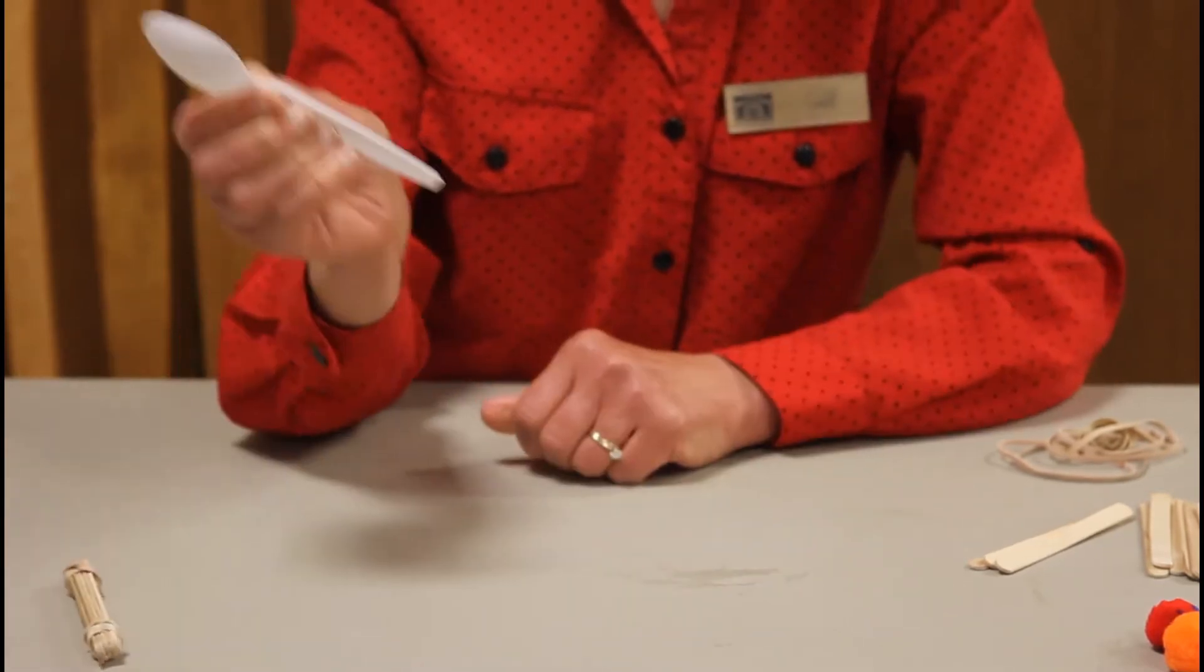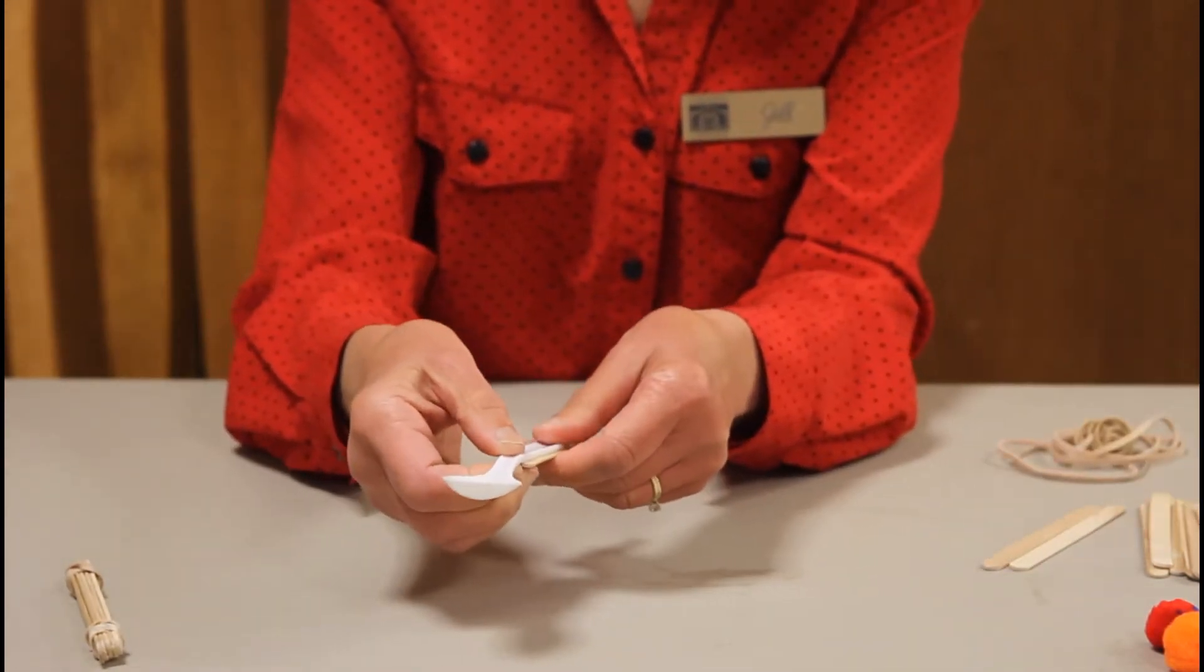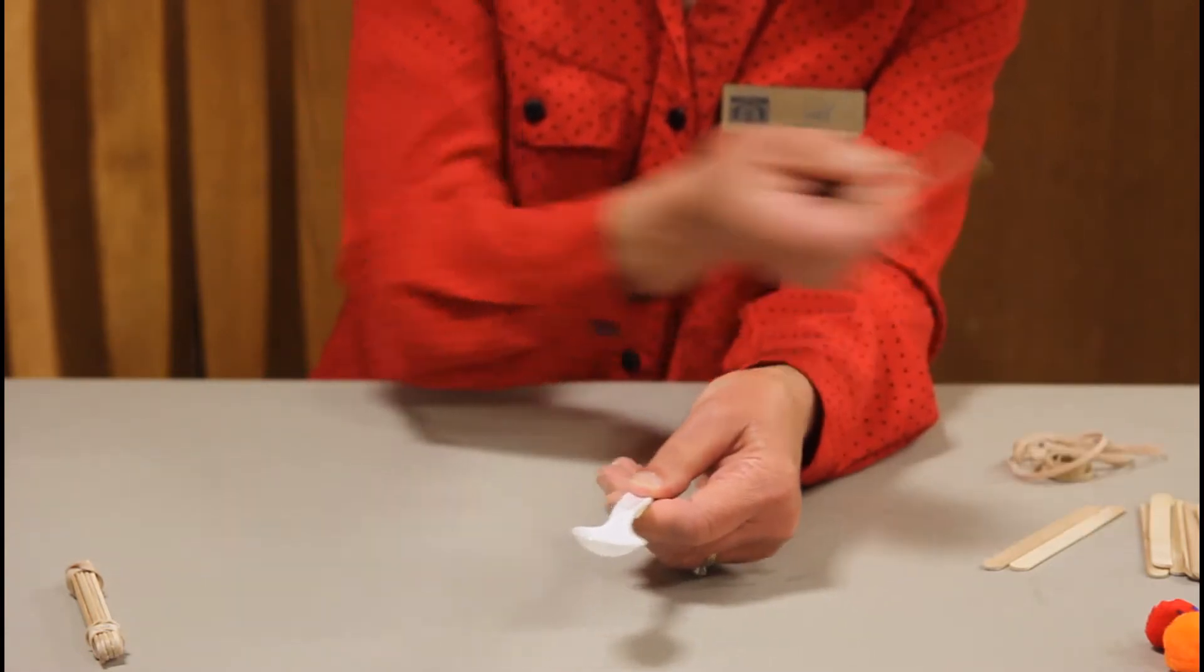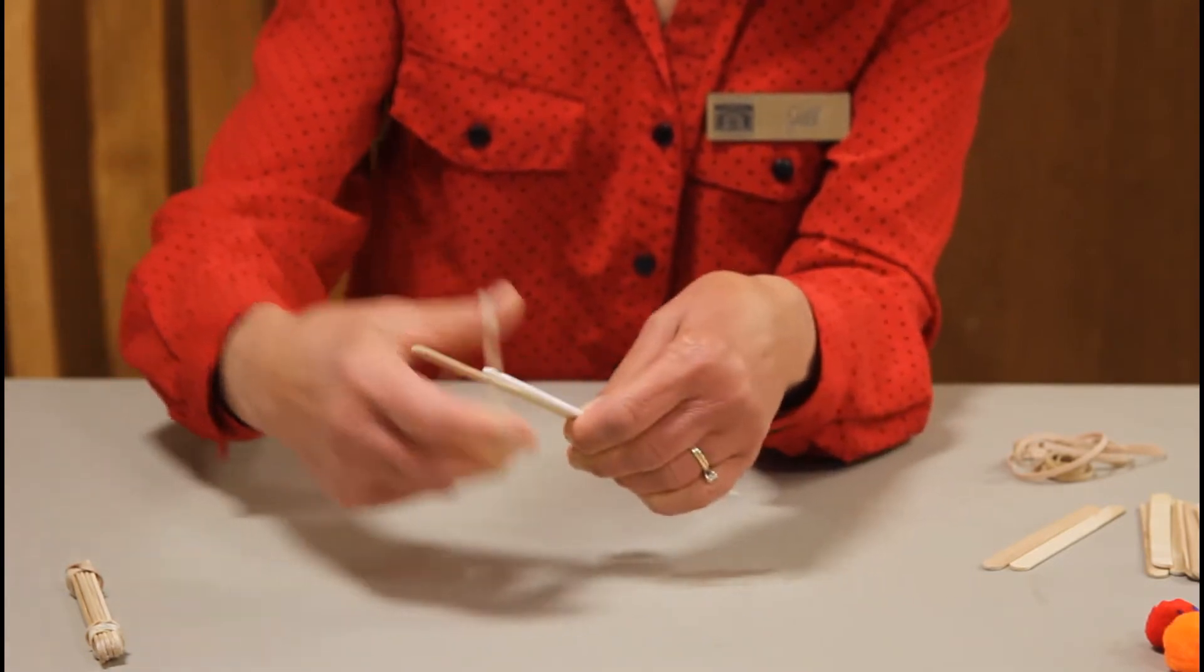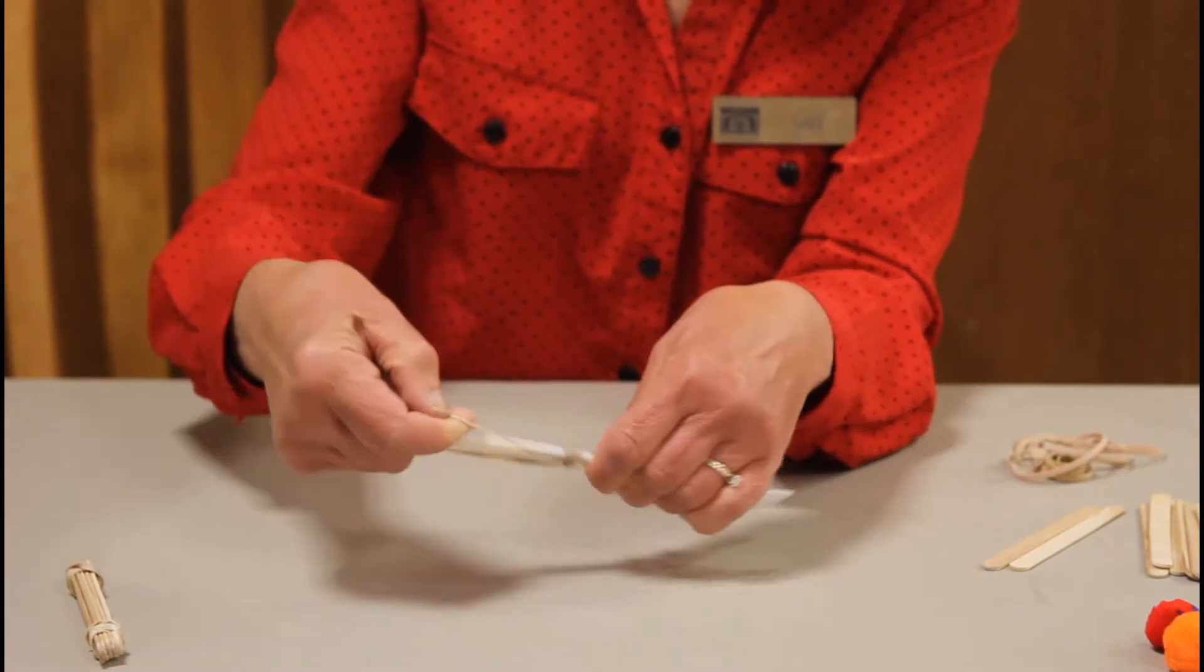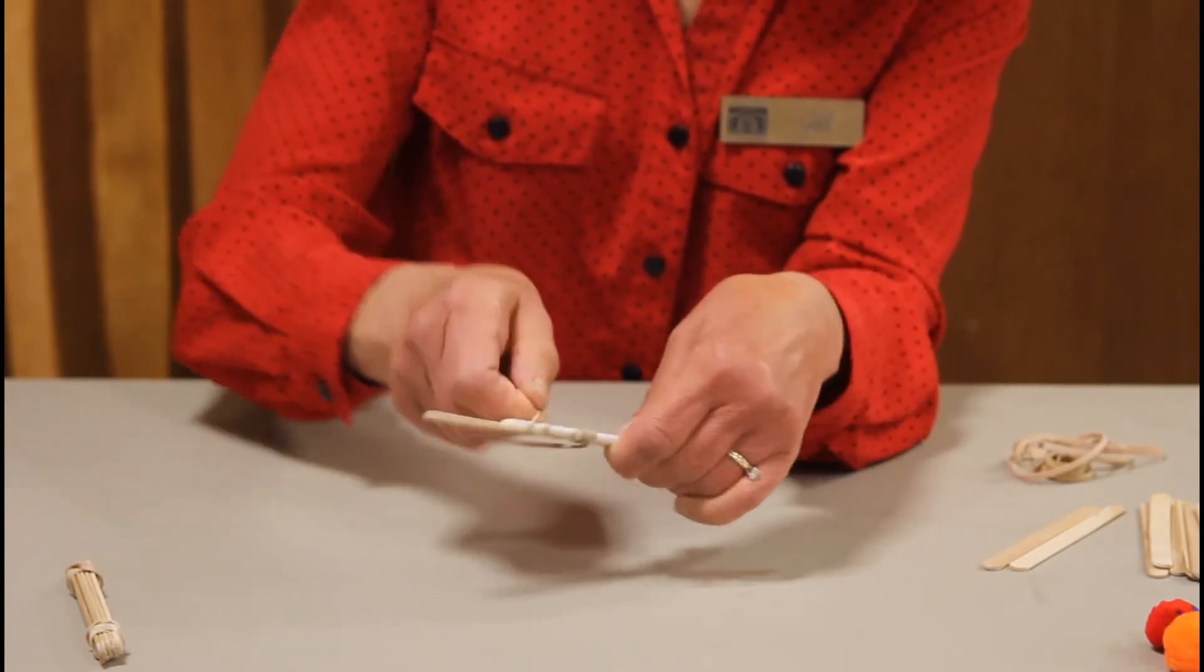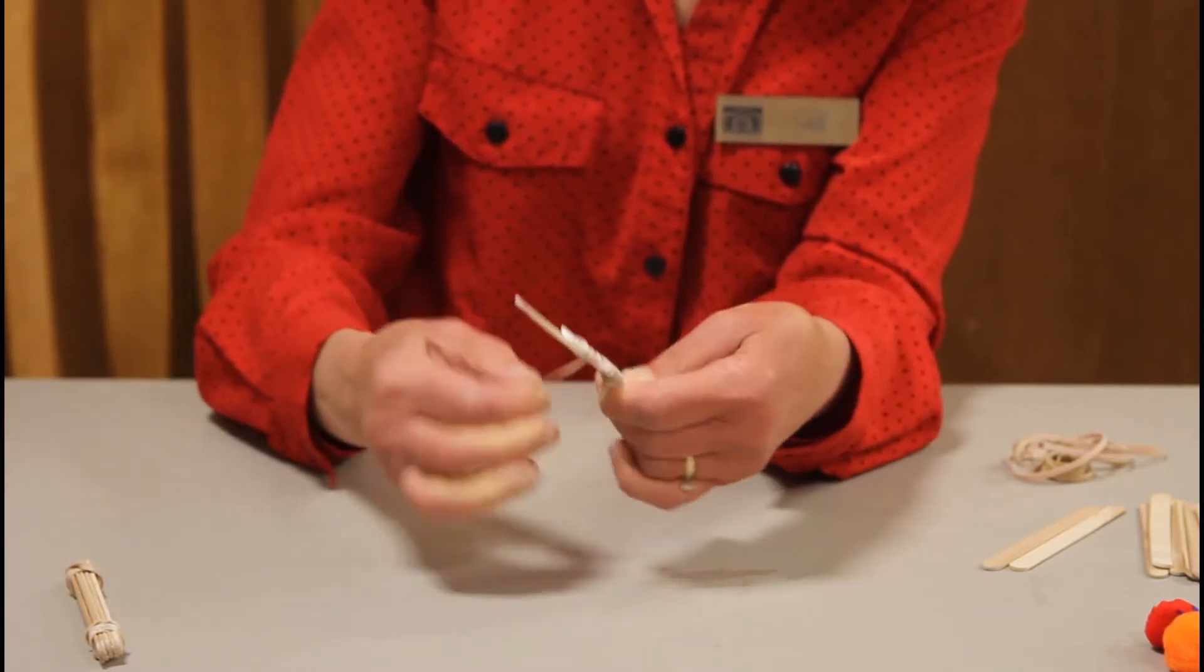But now you need to take your plastic spoon and another popsicle stick. And we are going to rubber band the popsicle stick and the spoon together. And again my rubber band's large. I'll keep wrapping that around just like this and at that point. And again my rubber band's still large.